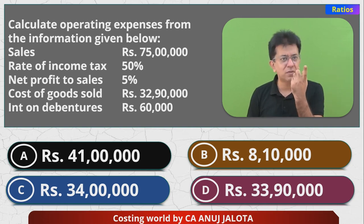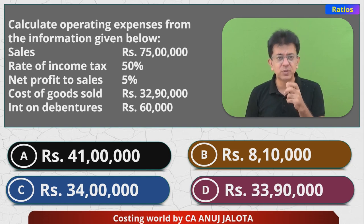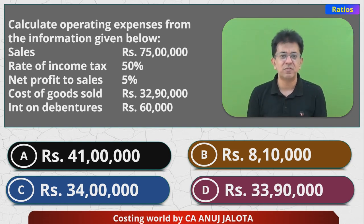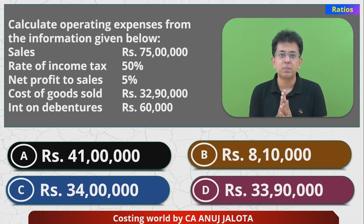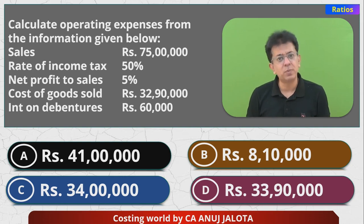The income statement should start with sales and reach till net profit. From this information, sales is 75 lakh rupees. Net profit ratio is 5%, so 75 lakhs × 5% = 3,75,000. That is going to be your net profit. Net profit by default always means net profit as per P&L account — that means the final profit, which means PAT. So your PAT will be 3,75,000.